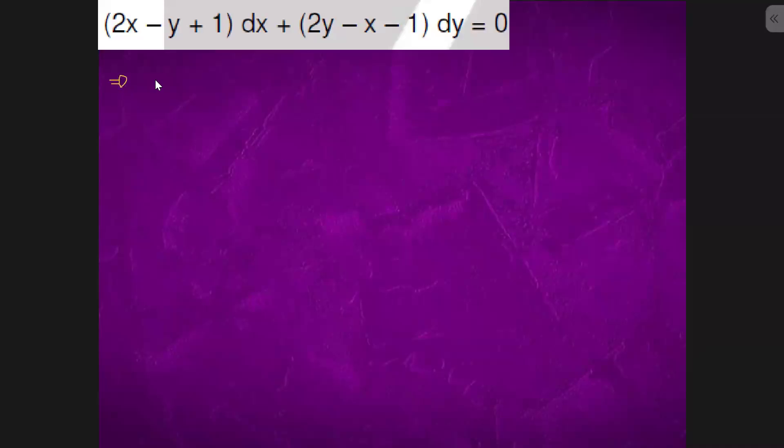We will have to solve this. So what we will do is we will directly expand this. This will become 2x dx minus y dx plus dx plus 2y dy minus x dy minus dy equals to 0.